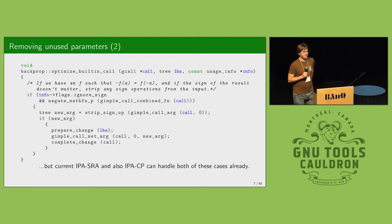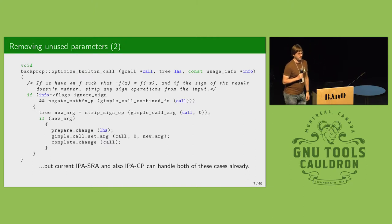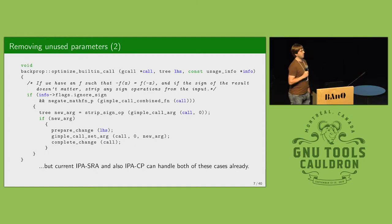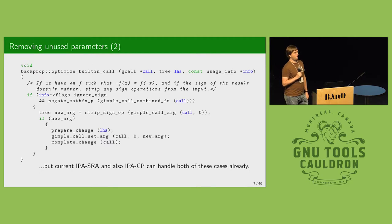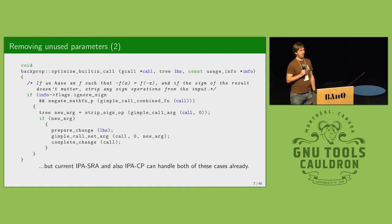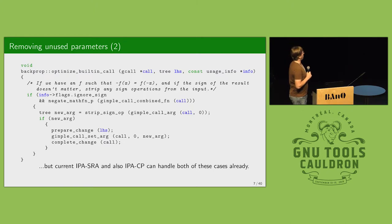All the cases I've shown so far could already be handled by the old IPA SRA. Actually, the removal of parameters I showed can also be handled by the inter-procedural constant propagation pass — when it evaluates whether a constant in a parameter is beneficial, it has to consider the uses of that parameter, and if there are no uses and it knows all the calls, it can just remove it.